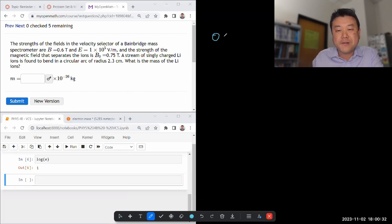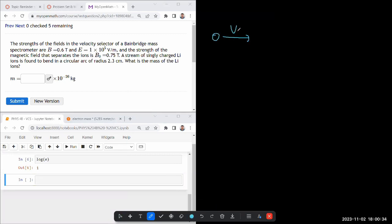So let's imagine there's a particle moving at some speed of V0. We are given magnetic field and electric field. And the strength of the magnetic field that separates the ions is that a stream of singly charged lithium ions is found to bend at a circular arc of... I see. So it's a two-step thing. So let me imagine this.